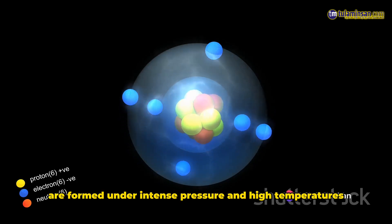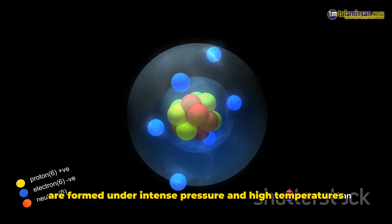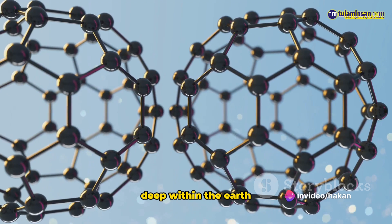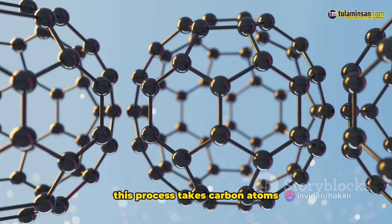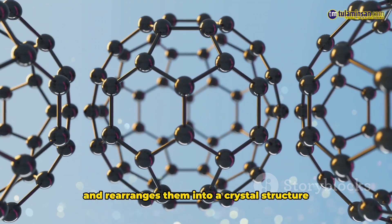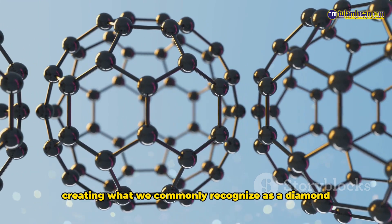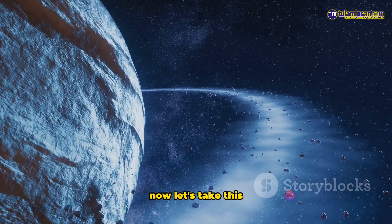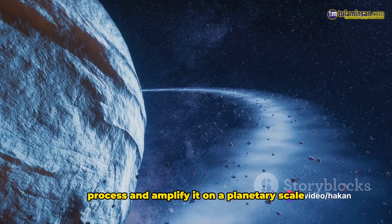Diamonds, as we know them, are formed under intense pressure and high temperatures deep within the Earth. This process takes carbon atoms and rearranges them into a crystal structure, creating what we commonly recognize as a diamond. Now, let's take this process and amplify it on a planetary scale.